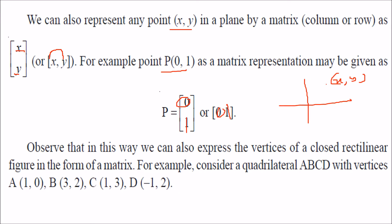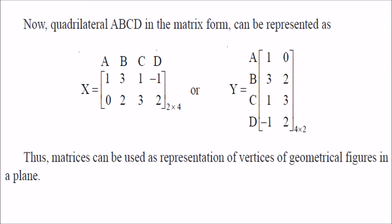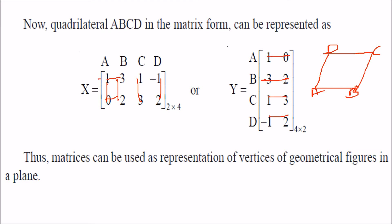We can also represent a figure with four points A, B, C, D. If we write the x and y coordinates with A, B, C, D as columns and x, y as rows, that gives a 2 × 4 matrix. Alternatively, with four rows and two columns, we get a 4 × 2 matrix.